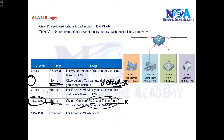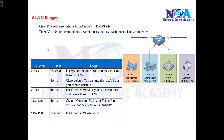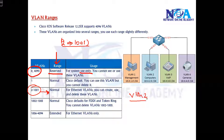We can create VLANs outside the default range. VLAN 1 we cannot change. The full VLAN range is 0 to 4095, but 0 and 4095 are reserved for system use only — you cannot see or use them. So if you want to create a VLAN, you create from 2 to 1001. That is the normal range — VLAN 2, 3, 4, up to 1001.